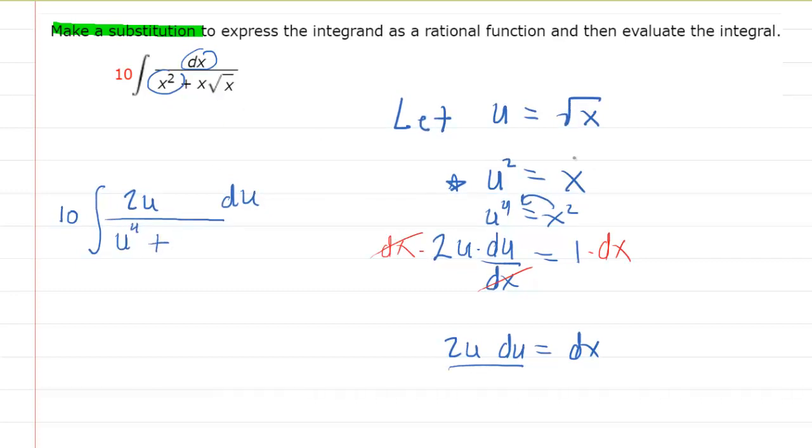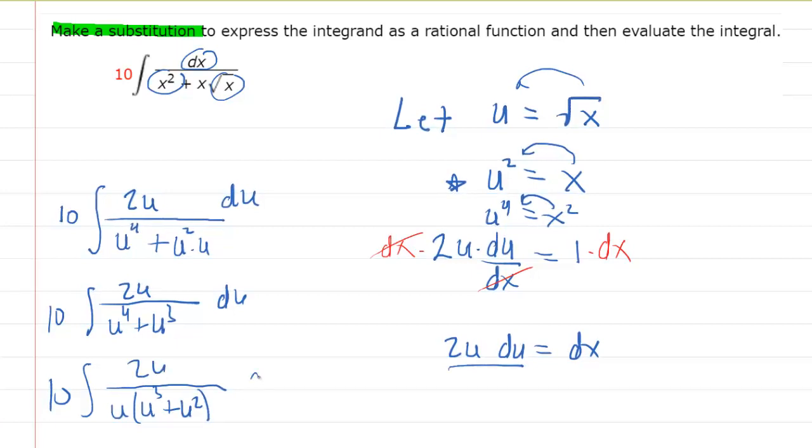Plus our x, which looking back was u squared, times square root of x. And looking back, that was just u. So now we'll simplify the denominator a little bit there. We're going to have u to the fourth plus u cubed. Let's factor out a u in the denominator so that if we factor it out, we'll have u cubed plus u squared.